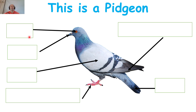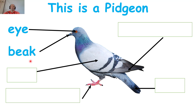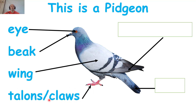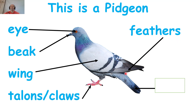Can you remember? The first one is the eye, or eyes — a pigeon has two eyes. Number two, a beak — this is the beak, a pigeon has a beak. Number three, a wing or wings — a pigeon has two wings. Number four, talons or claws — a pigeon has claws on its feet. Number five, feathers — a pigeon has feathers. And the last one, a tail — a pigeon has a tail.